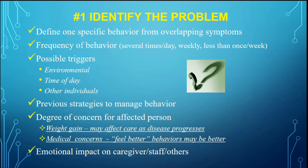Always consider the emotional impact on the caregiver and the staff. Sometimes when you suggest a strategy, like telling a small white lie, a caregiver may say they could never do that. Acknowledge that their feelings are their feelings — never criticize them. But also try to understand: do they understand the disease? Are they educated about it?